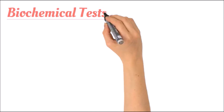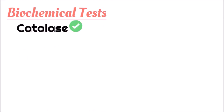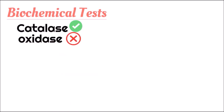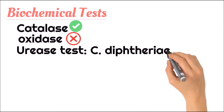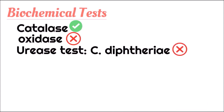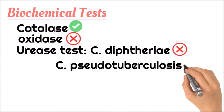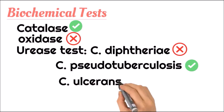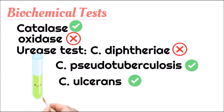The biochemical tests include: catalase test, which is positive for Corynebacterium; oxidase test, which is negative; and urease test, which is negative for Corynebacterium diphtheriae but positive for Corynebacterium pseudotuberculosis and Corynebacterium ulcerans, helping to differentiate Corynebacterium diphtheriae from the other two.